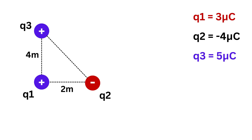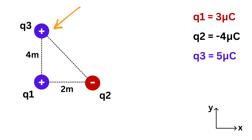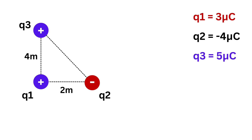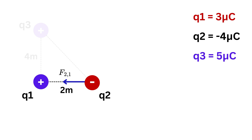In the second problem, the same three charges are placed in a 2D configuration: q1 at the origin, q2 on the x-axis 2 meters to the right of q1, and q3 on the y-axis 4 meters above q1. Our task is to find the magnitude of the net force on q2 due to both q1 and q3. We begin by calculating F(2,1): since q1 is positive and q2 is negative, they attract, so F(2,1) points to the left along the negative x-axis.